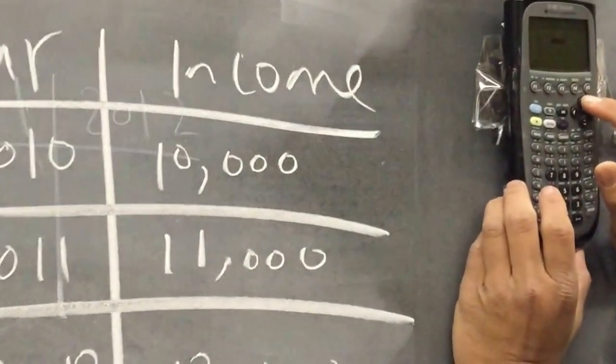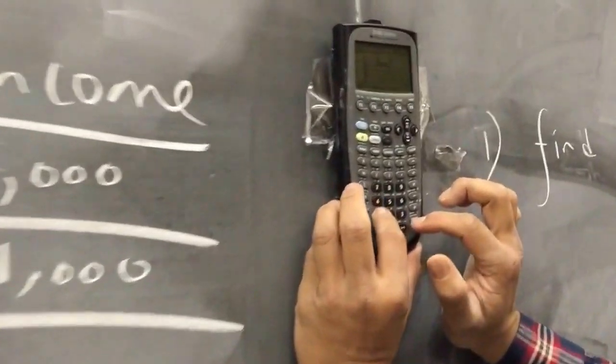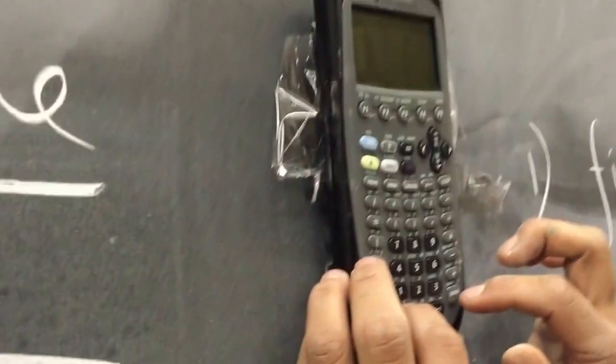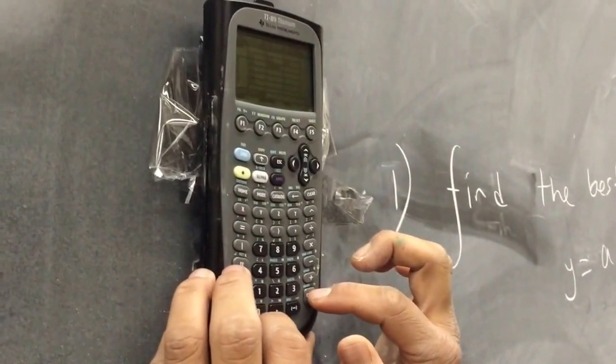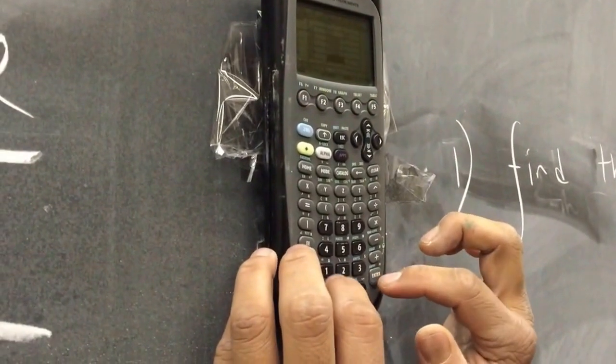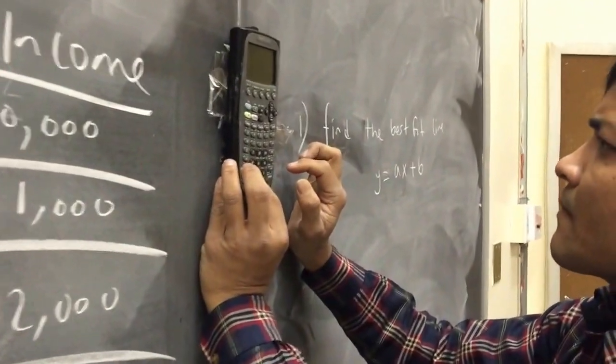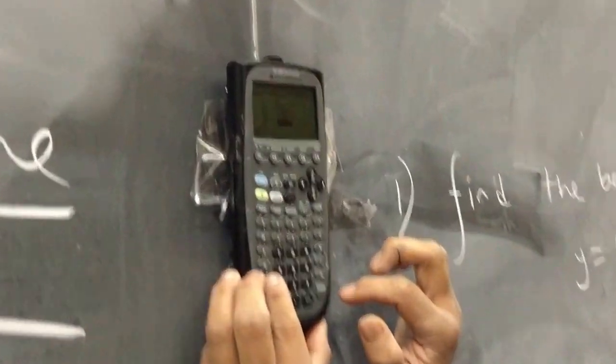this is income. So 2000 represents 10,000. So I'm going to press, of course, 10,000, then 11,000, 12,000, 13,000, 14,000.